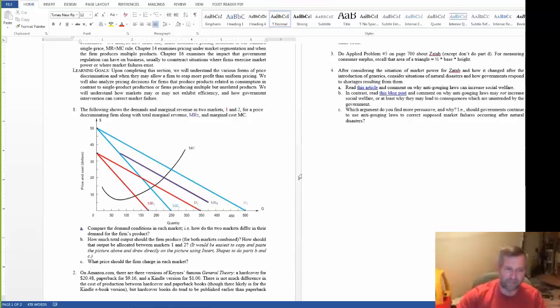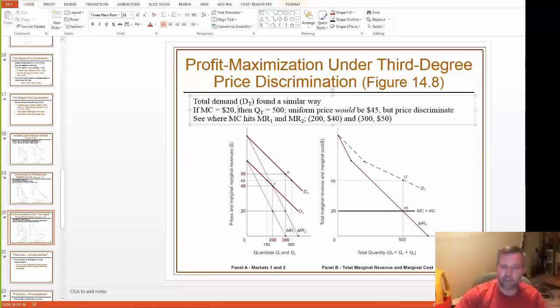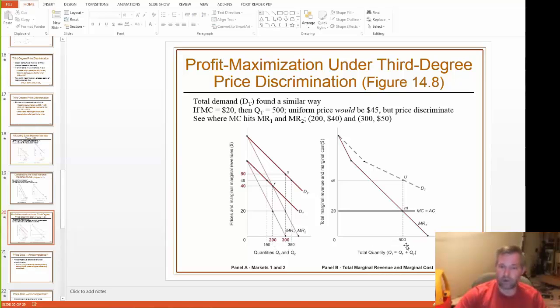The hint that I gave the student that emailed me - if you do it the right way, then you should end up saying that the total output here was 500 units. What I found out in the book was that in market one, the optimum is to sell 200 units, and in market two, the optimum is to sell 300 units. That's not too shocking because the combined output from market one and market two equals the total output that ends up here.